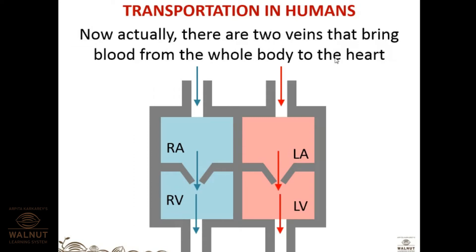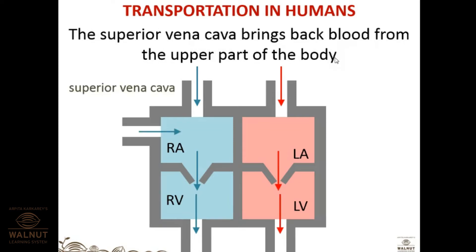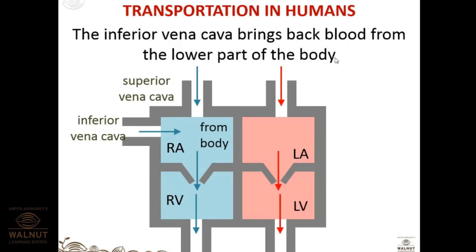There are two veins that bring blood from the whole body to the heart: the superior vena cava and the inferior vena cava. The right side of the heart carries deoxygenated blood, so these blood vessels bring deoxygenated blood to the right atrium. Superior vena cava brings deoxygenated blood from the upper part of the body.